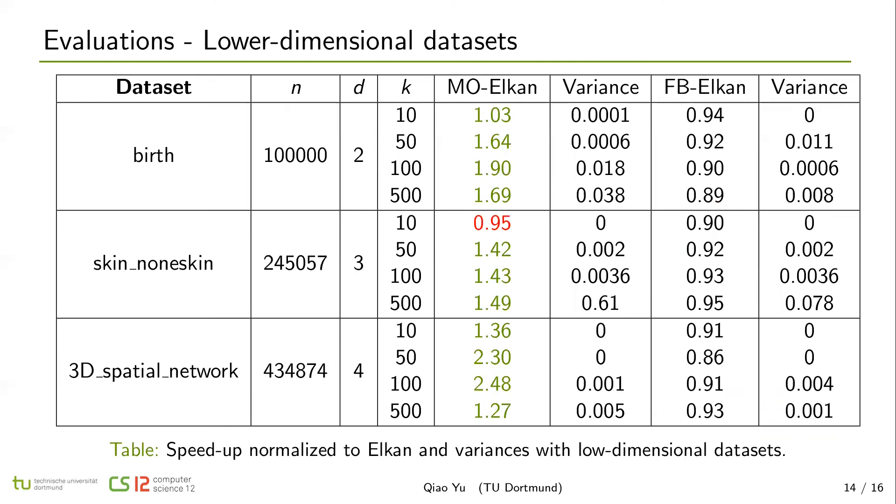In low dimensional datasets, MO-Elkan is usually faster than Elkan k-means, and our FB-Elkan is slightly worse than Elkan k-means. Because here the overhead of checking additional filtering bounds in FB-Elkan is higher than the benefit of filtering unnecessary distance calculations. And with similar reasons, MO-Elkan requires less memory access to filtering bounds than others.